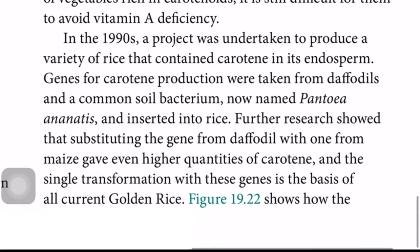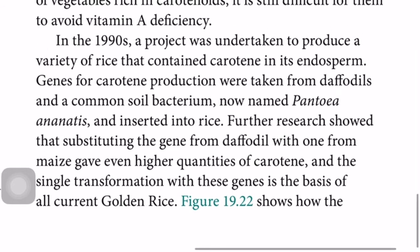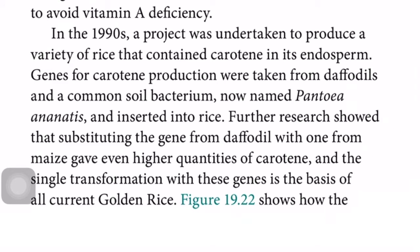In the 1990s, a project was undertaken to produce a variety of rice that contains carotene in its endosperm. Genes for carotene production were taken from daffodils and the common soil bacterium Pantoea ananatis and inserted into rice. Subsequently, substituting the daffodil gene with one from maize gave even higher quantities of carotene, and this single transformation with the maize gene is the basis of all current golden rice.